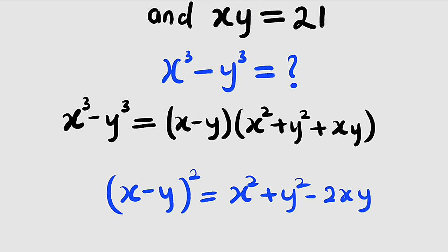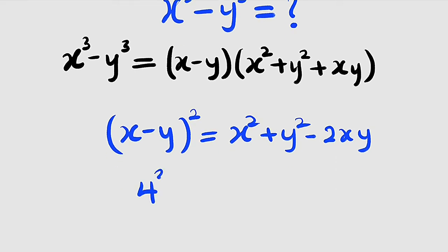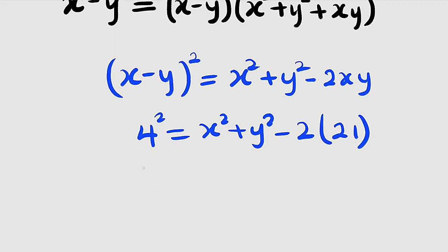But we have seen that x minus y is 4, x times y is 21. So we have 4 squared equal to x squared plus y squared minus 2 multiplied by 21. 4 squared is 16.